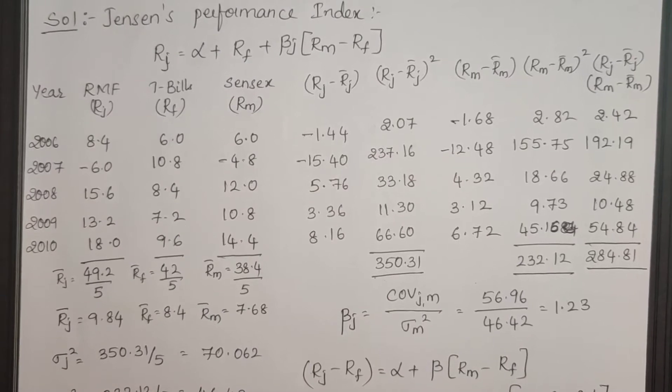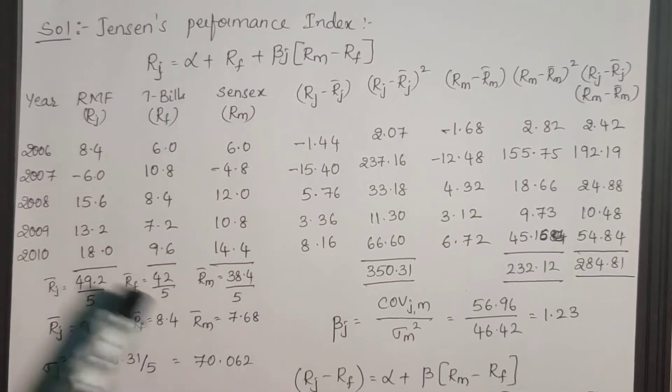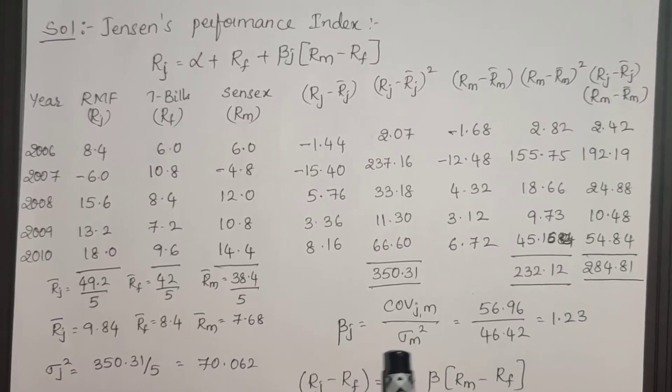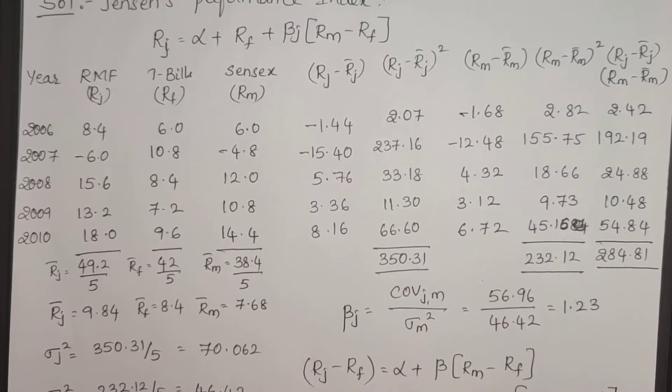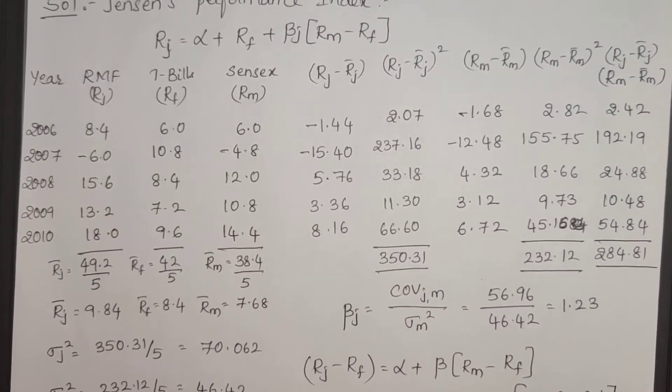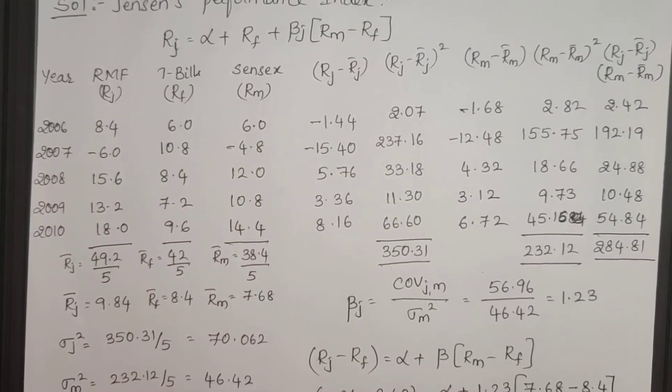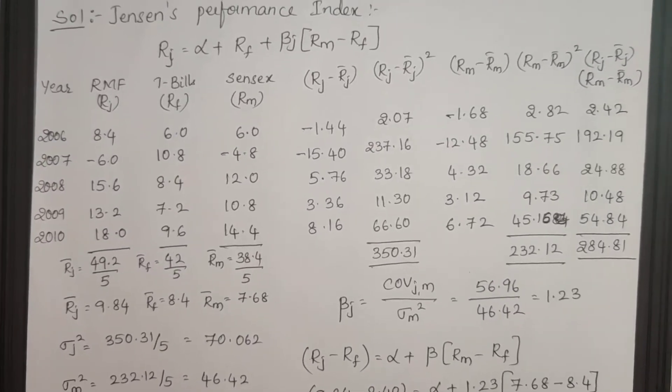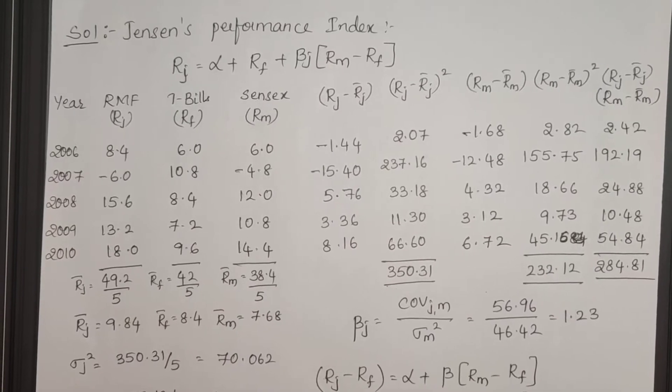Next step is calculation of beta. How beta is calculated we have already discussed in the earlier problem. Beta equals covariance between security and market by market variance. Based upon the information provided, we have to calculate the risk of security, risk on market, and then calculate the covariance.